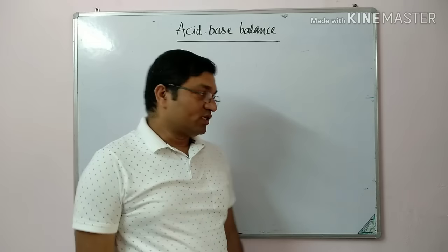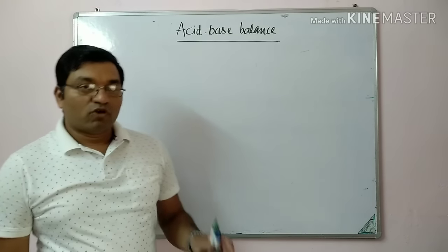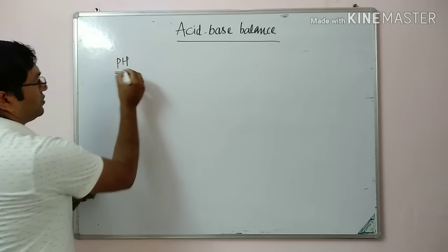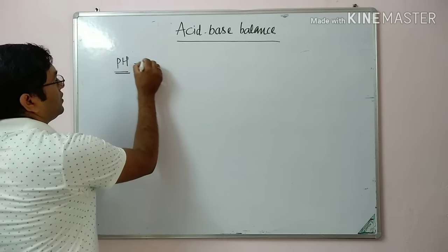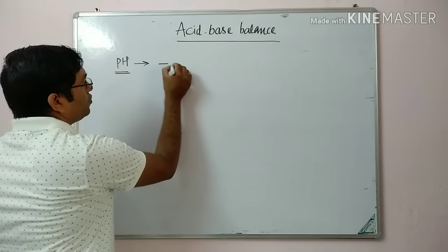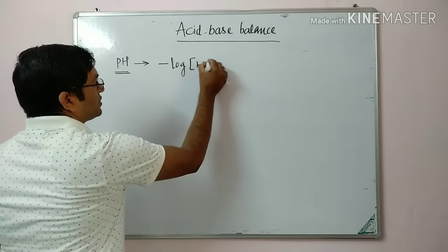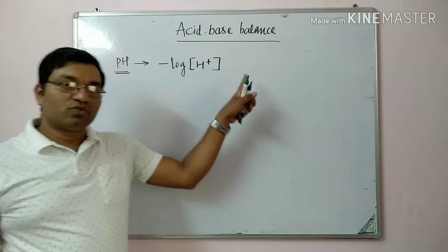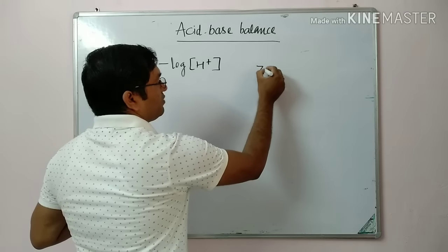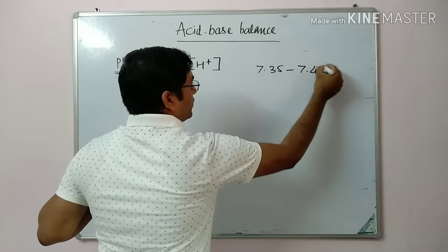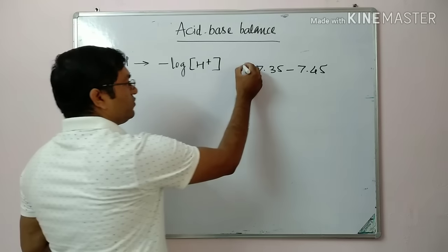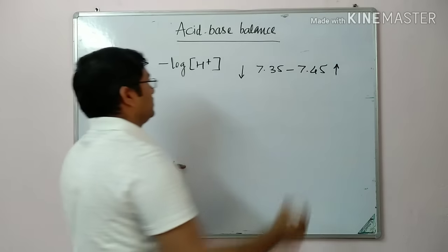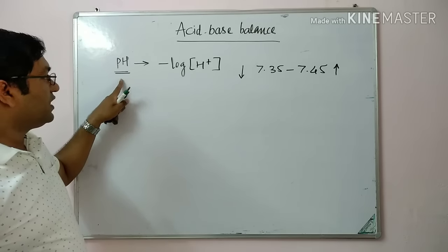There are some terminologies for acid-base balance. The first one is pH, defined as the negative logarithm of hydrogen ion concentration. If hydrogen ion concentration increases, pH decreases, leading to acidosis. The normal value is 7.35 to 7.45. If it is less than 7.35, it is acidosis; if more than 7.45, it is alkalosis.